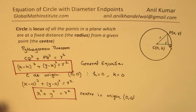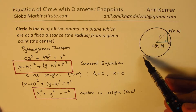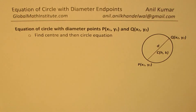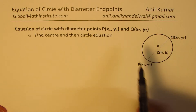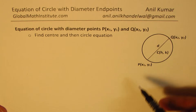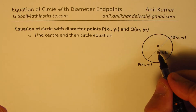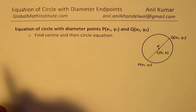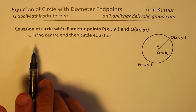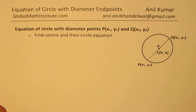With this background, let us see how to derive an equation where we are given two points on the diameter of the circle. We will find the equation of a circle with diameter points P and Q. Point P is (x1, y1) and point Q is (x2, y2), with the center at C = (h, k). Method 1 is to find the center and then the circle equation using any point on this circle.